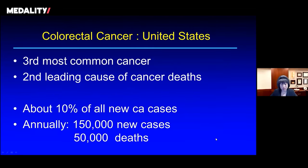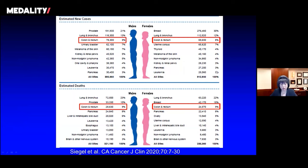In the United States, the statistics really parallel the global picture. It's the third most common malignancy and the second cause of cancer deaths. Annually, we have about 150,000 new cases and about 50,000 deaths, representing about 10% of all cancer cases. This graphic shows that colorectal cancer is the third most common malignancy in both men and women — in men it's behind prostate and lung, and in women it's behind breast and lung.